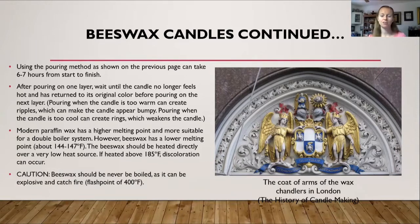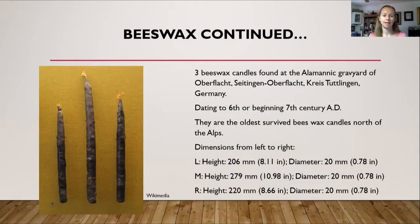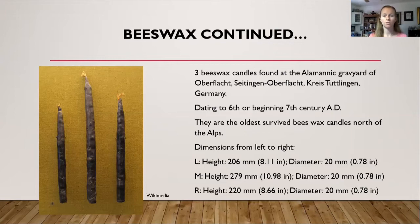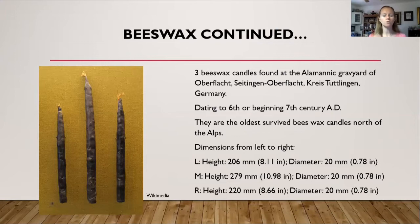On the right-hand side of the page is the Coat of Arms of the Wax Chandlers of London. The oldest beeswax candles I have found to be in existence are at the Alamannic Graveyard in Oberflacht in Germany. They date to either the late 6th or early 7th century AD, and they are the oldest surviving beeswax candles north of the Alps. The one on the far left is about 8 inches long and about three-quarters of an inch wide. The one in the middle is almost 11 inches tall and about three-quarters of an inch wide. And the one on the right is about 8 and a half inches long and also three-quarters of an inch wide.